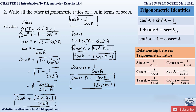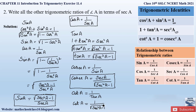Finally, cot A. Cot A can be written as 1 by tan A. Since we have already found the value of tan A, taking its reciprocal gives cot A = 1 / √(sec²A − 1). So this is how we express cot A in terms of secant.